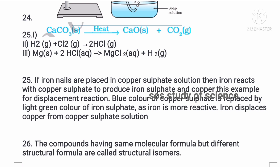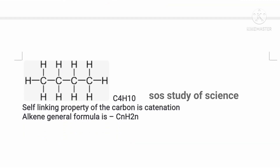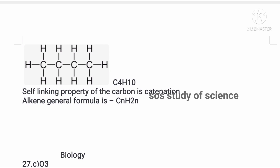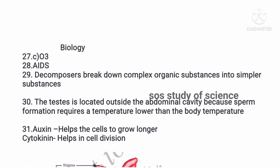The twenty-fifth question asks what happens when an iron nail is placed in copper sulfate solution. Since iron is more reactive, it displaces copper from copper sulfate solution, and the blue copper sulfate solution changes color to light green. The twenty-sixth question: isomers are compounds having the same molecular formula but different structural formulas. Write the structural and molecular formula of butane. Catenation is the self-linking property of carbon. The general formula of alkyne is CₙH₂ₙ₋₂.